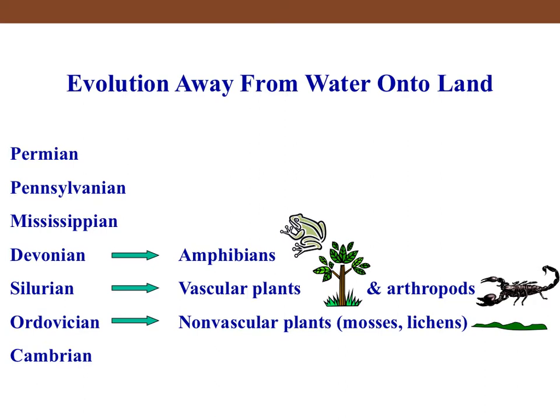The first plants appeared in the Ordovician, after the Cambrian when life began, or maybe in Precambrian times. Those first plants were non-vascular plants — mosses and symbiotic lichens — that could live in tough places. It was during the Silurian that the first vascular plants arose, and that's also when arthropods, including insects, arose. In the Devonian, vertebrates arose. And it wasn't until much later, in the Cretaceous period, that the first flowering plants' fossils have been found.